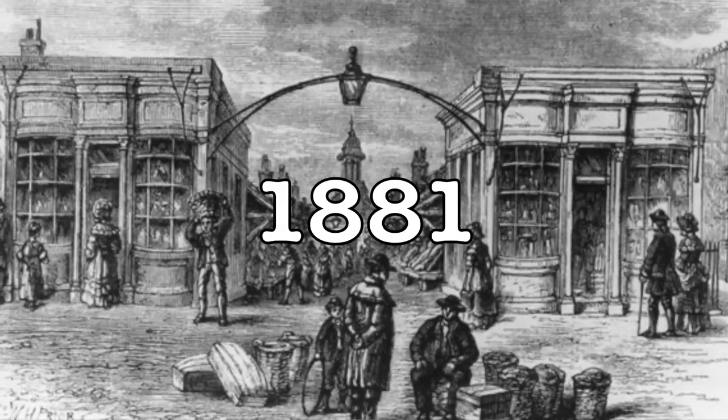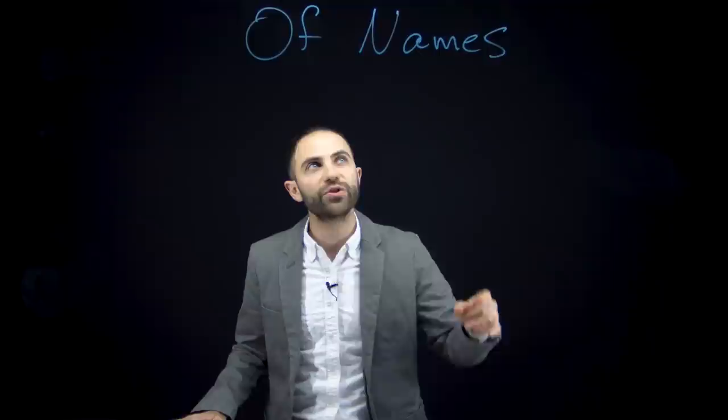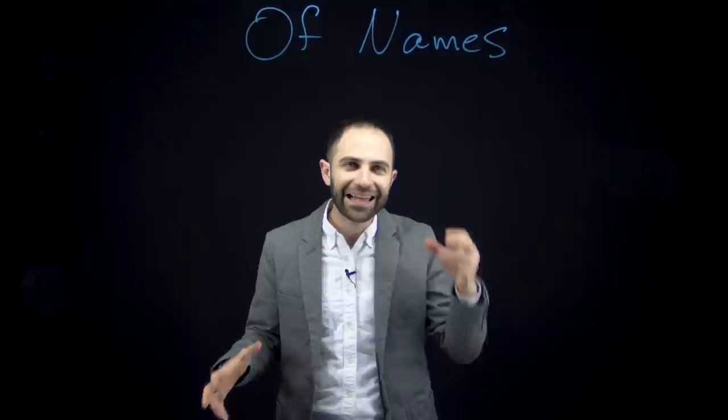In 1881, somewhere in England, probably, John Stuart Mill wrote an essay called 'Of Names.' Mill is using the word 'name' to pick out not just proper names like Abraham or Sally, but anything that can function as the subject of a sentence.